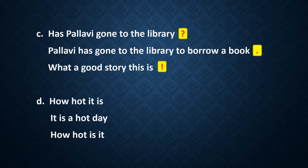Part D — three sentences. 'How hot it is!' — a strong feeling, expressing that it is very hot, so an exclamation mark. 'It is a hot day.' — telling us information, so a full stop at the end. 'How hot is it?' — asking a question, so a question mark will come at the end.